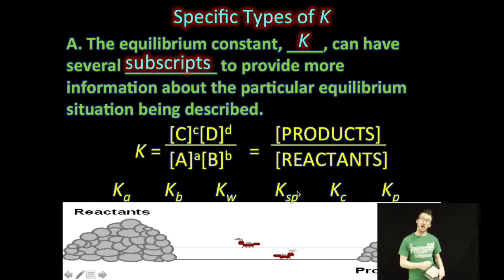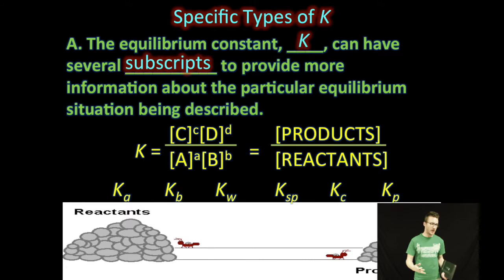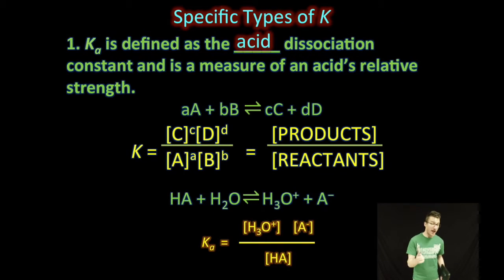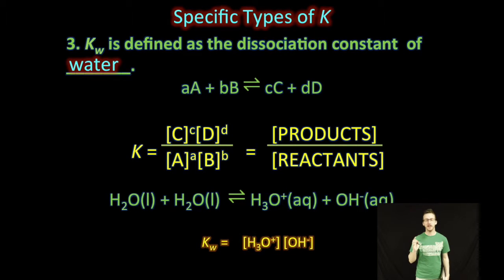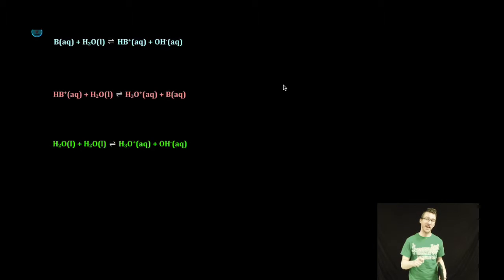Keep in mind there are other equilibrium constants you'll see — Ksp, Kc, Kp — but for our unit on acids and bases we're going to focus primarily on Ka, Kb, and Kw. Now there's an important relationship that exists between Ka, Kb, and Kw.